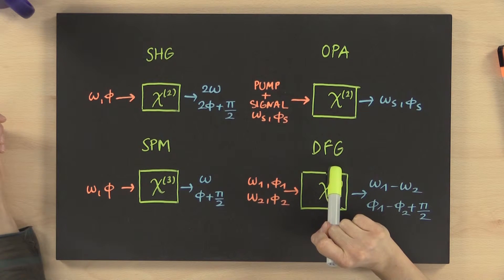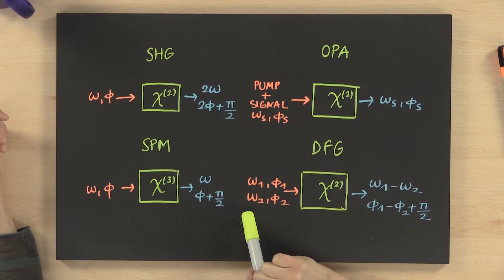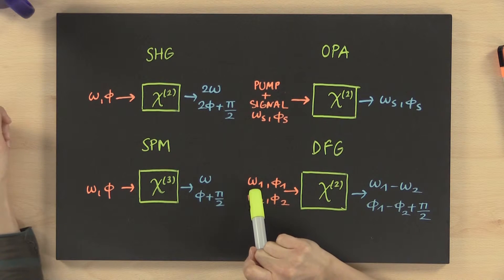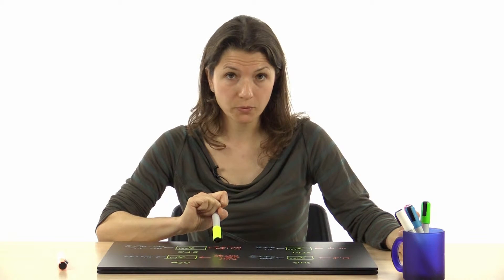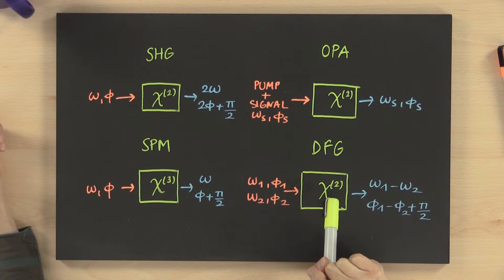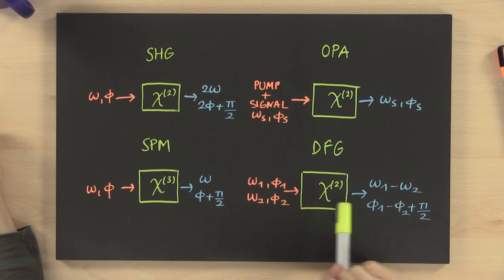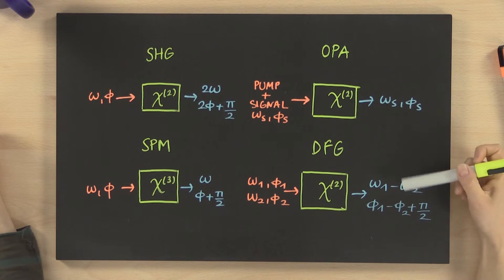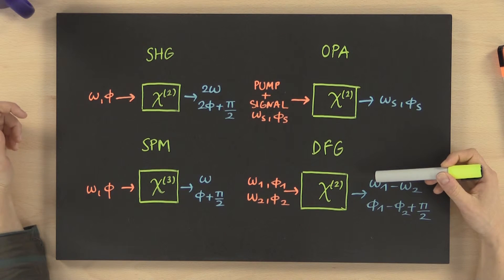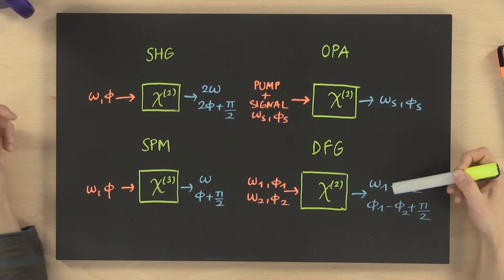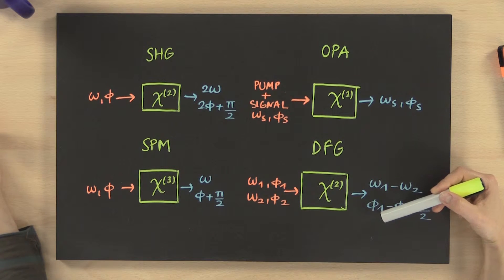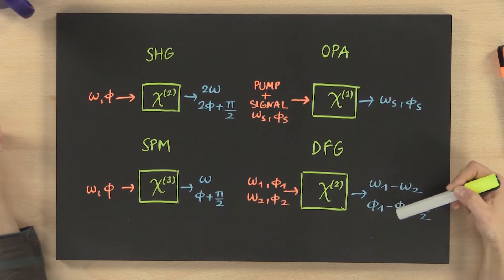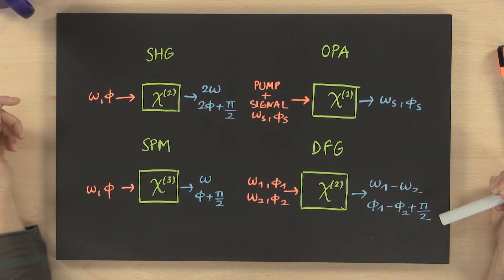In difference frequency generation, we have two pulses with frequencies ω1 and ω2 and carrier envelope phases Φ1 and Φ2. These go through a second-order non-linear medium and at the output we get a pulse with frequency ω1 minus ω2, and a phase which is the difference between the two phases: Φ1 minus Φ2, plus a constant factor.